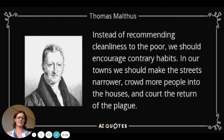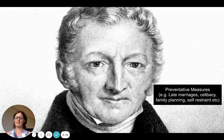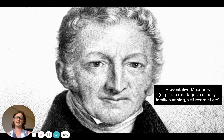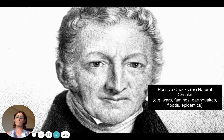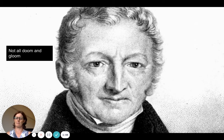He's saying we should live in crowded conditions — diseases are great. Things like the plague will increase our death rate. He says we have preventative measures: we can prevent this by getting married later, abstaining, family planning, and self-restraint — all of that would lower the birth rate. He also says we have positive or natural checks: anything negative that happens naturally, like a flood or a natural disaster. He also likes wars and famines because they keep things in check, increasing the death rate. It's not putting pressure on resources.